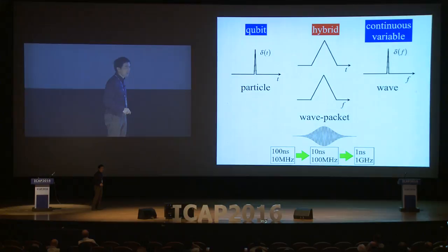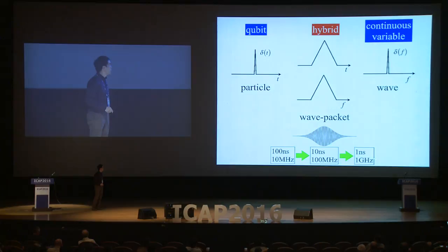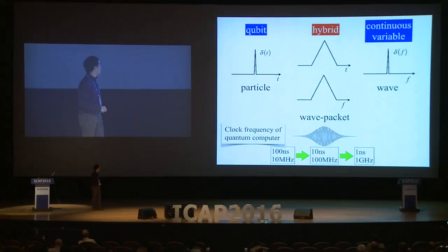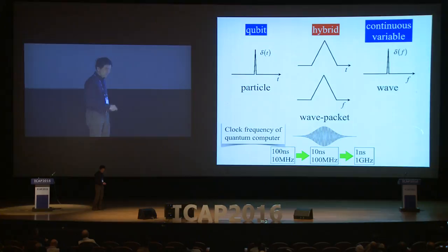The time duration and bandwidth are evolving this way. At the moment we are using 100 nanosecond time duration and 10 megahertz bandwidth. Coming next to 10 nanoseconds and 100 megahertz. And our goal is 1 nanosecond and 1 gigahertz. That is because it determines the clock frequency of our quantum computer, and as you know, the clock frequency of an ordinary computer is on this order.